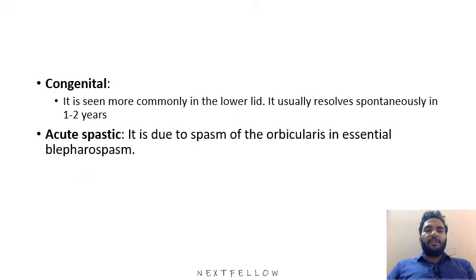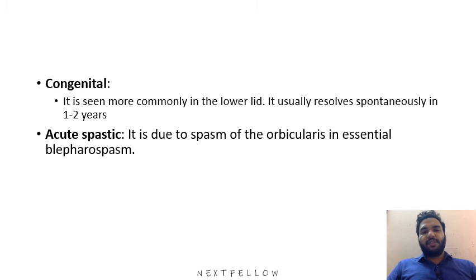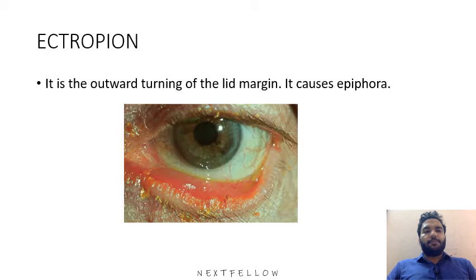Congenital entropion is more commonly seen in the lower lid and usually resolves in one to two years. Acute spastic entropion is due to spasm of the orbicularis in essential blepharospasm.